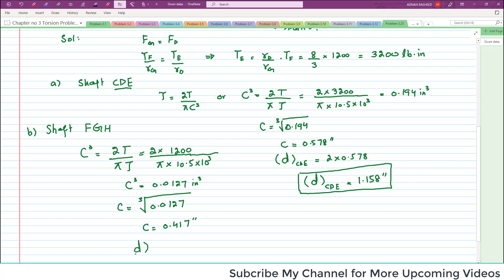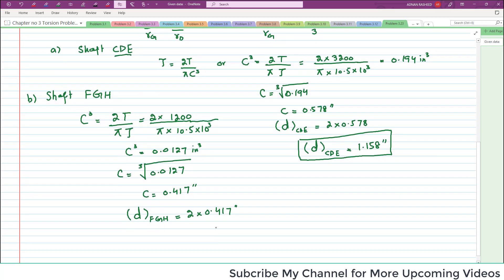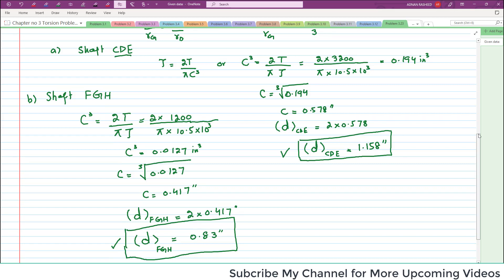In order to find diameter of shaft FGH, that equals 2 times this radius which is 2 multiplied by 0.417 inch, and that will equal 0.83 inch. So this is the diameter of shaft FGH. Hence we have calculated both parts of our problem. In part first we calculated diameter of shaft CDE and in part B we calculated the diameter of shaft FGH.